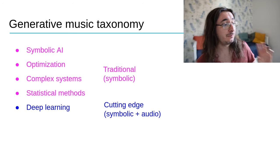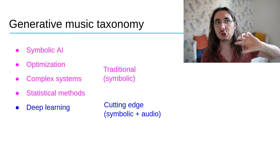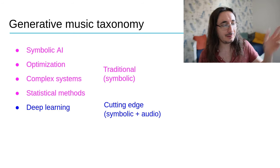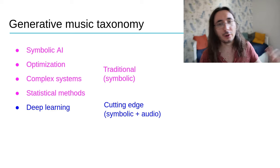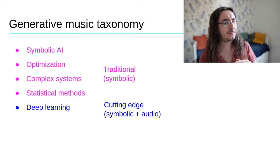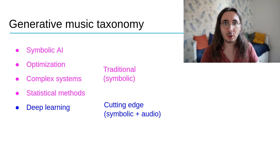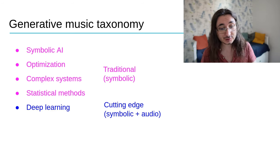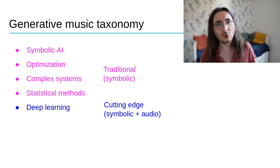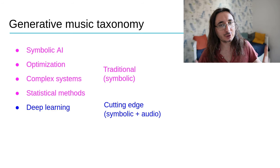Over the last few years we've also been using deep learning. All the news about amazing new models that generate music or can sing — they all more or less use deep learning or a variation of it. With these models we've been able not only to generate a symbolic representation of music but also to work directly with an audio representation. This wasn't possible before because models weren't capable enough to handle that level of complexity.